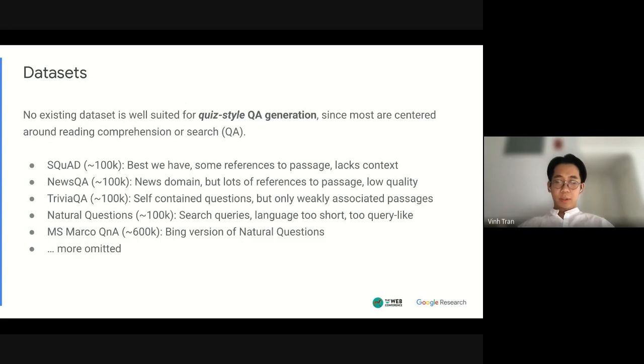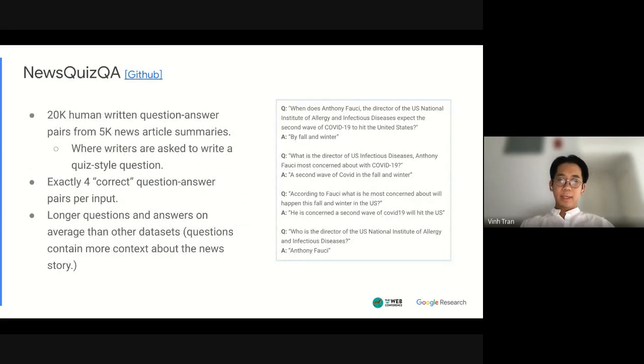And to learn this quiz style question answer generator we actually need a good suitable data set but it turns out that there's actually no existing data set that captures this quiz style requirement since most question generation data sets have just been repurposed from question answering data sets. And so we set out to collect a new data set of the quiz style and also in the news domain where we give 5,000 news article summaries to human writers and we ask them to write a question and answer pair for us. And as you can see on the right given an input we actually get four equally correct target question answer pairs and the questions are relatively long and descriptive.